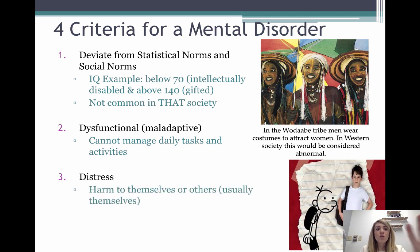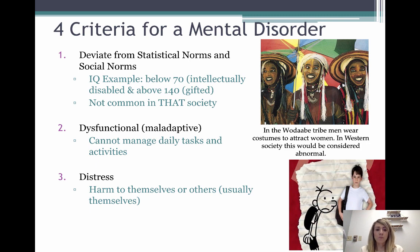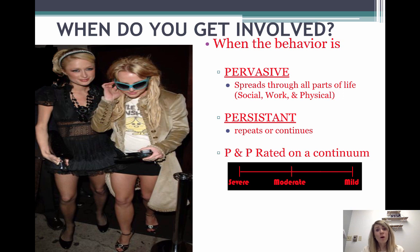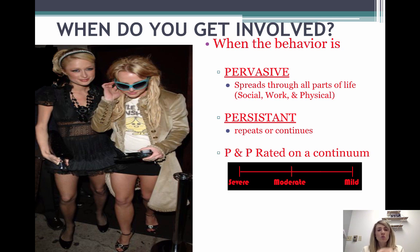The next criteria are distressful — harmful to self or others. You'll notice there are three Ds: deviate, dysfunctional, distressful. Distressful is important because, yes, some people with mental illness are harmful to others, but the majority are harmful to themselves. Then there are two Ps that go together: pervasive and persistent. Pervasive means the behavior is in all different parts of your life — school, friends, home. Persistent means it's not just once or twice, but two weeks or more, six months, repetitive times.